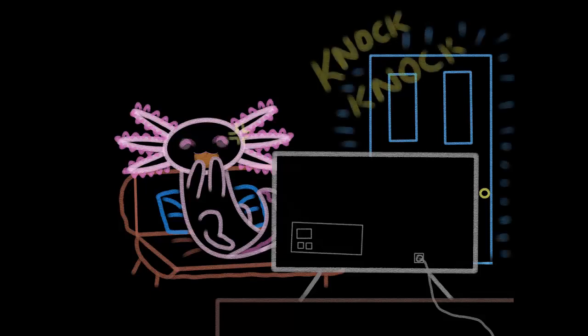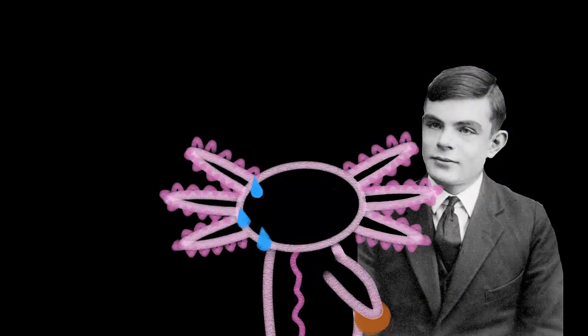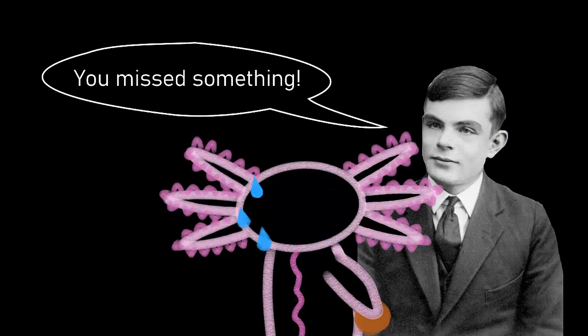But in this moment, someone knocks at your door. It's Turing, and he says the construction you have actually missed something. We skipped over something very important when we defined the real numbers. Turns out that in his paper, he proved the real numbers are actually split in two: computable and non-computable numbers.